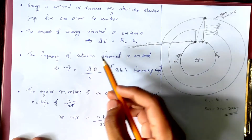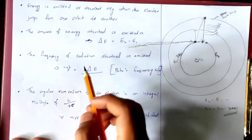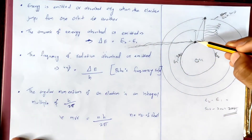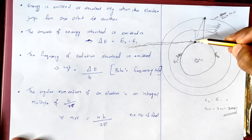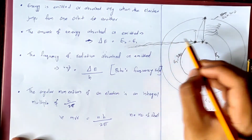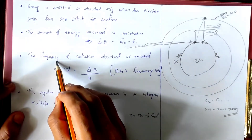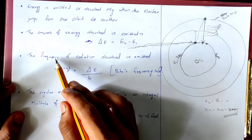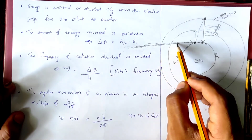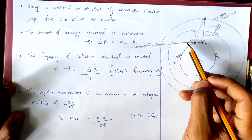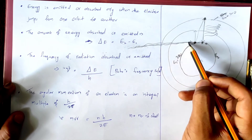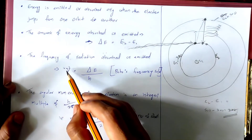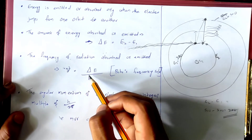The frequency of radiation absorbed or emitted is equal to delta E divided by h — this is Bohr's frequency condition. The frequency of radiation is the number of waves per second of electromagnetic radiation. The frequency equals delta E divided by h.